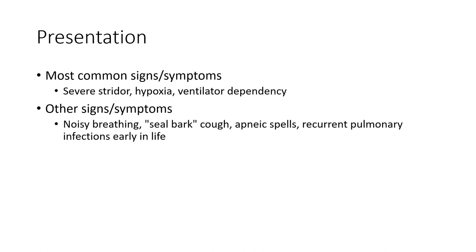Most common signs and symptoms: severe stridor, hypoxia, and ventilation health dependency. Other signs and symptoms include noisy breathing, seal bark cough, apnea, expiratory wheeze, and recurrent pulmonary infection early in life.